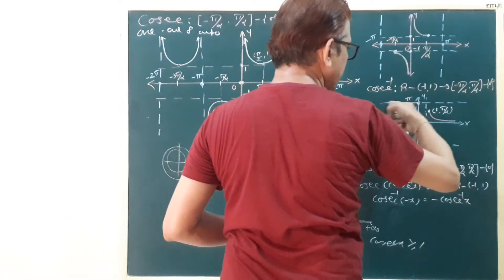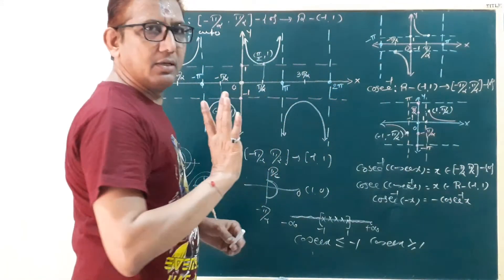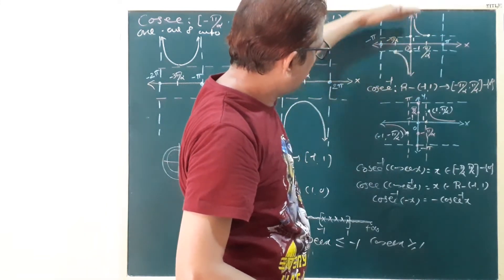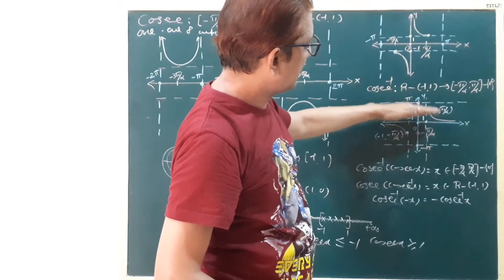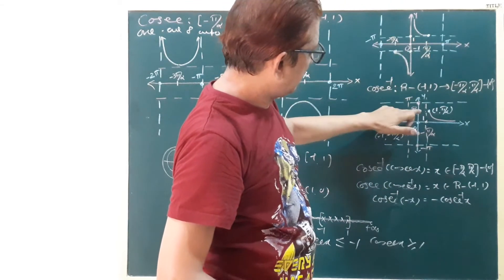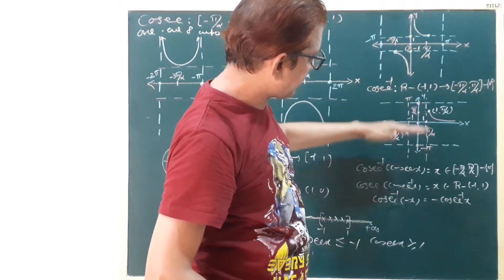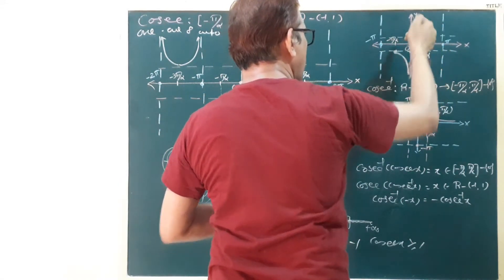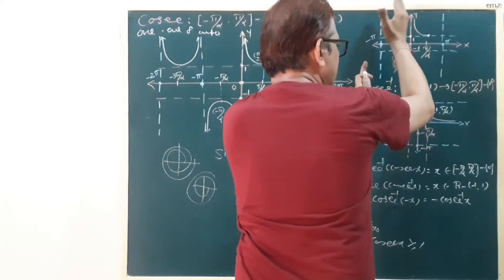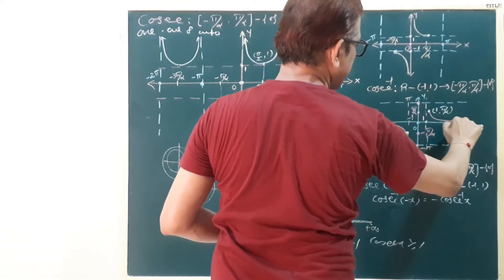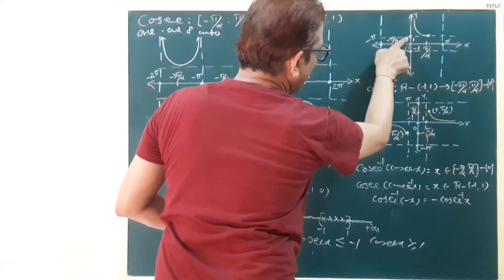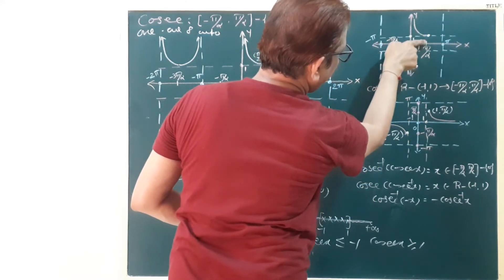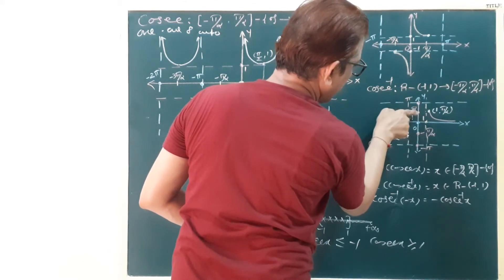Here we draw two vertical lines at pi and minus pi, and horizontal lines at pi and minus pi. This portion is above the x-axis, and this portion is below the x-axis. The first quadrant portion: after rotating anticlockwise, the graph starts on the x-axis. The values 1 and minus 1 that were on the y-axis are now on the x-axis. At point (pi by 2, 1) — now this point becomes (1, pi by 2).